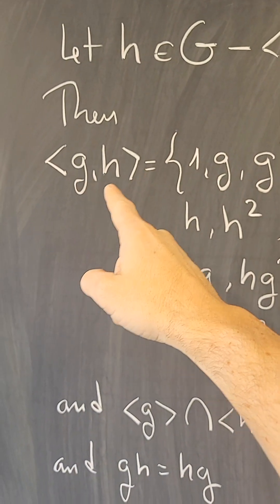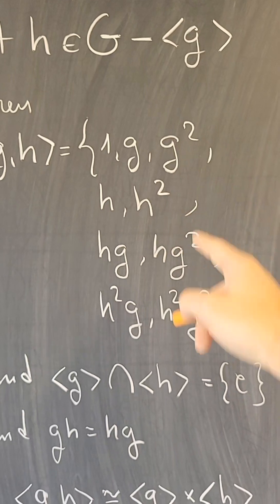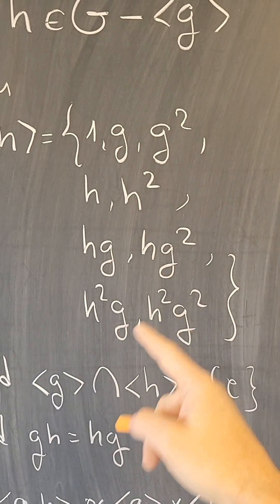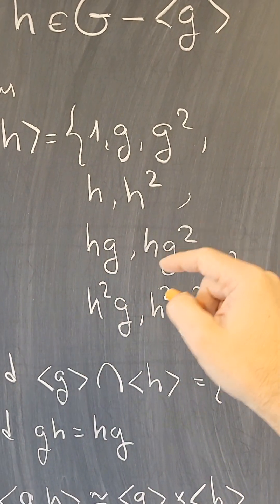The subgroup generated by g and h will have exactly these elements: 1, g, g squared, then h and h squared, and then products of h and g's. That's all of them.